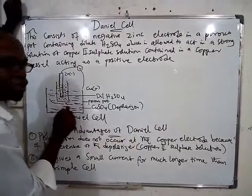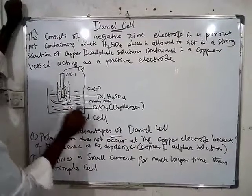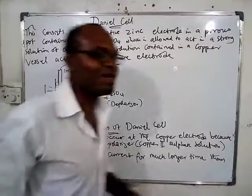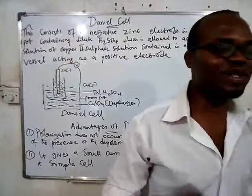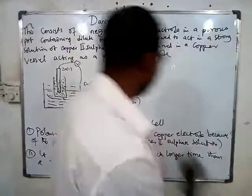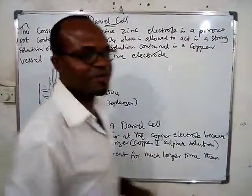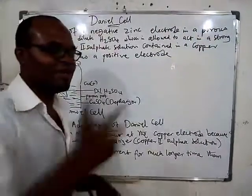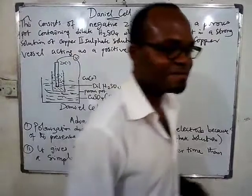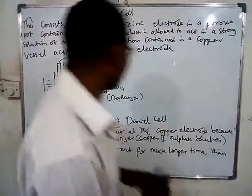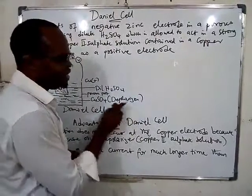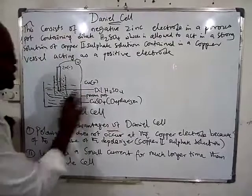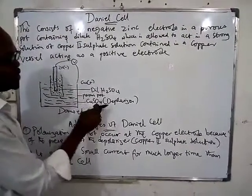This is a strong solution of copper(II) sulfate. As I told you when treating the simple cell, copper(II) sulfate acts as a depolarizer — it prevents polarization. So what is the advantage of the Daniel cell over the simple cell? It means that the problem of polarization is already solved, because one of the components of the Daniel cell is copper(II) sulfate, which acts as a depolarizer.